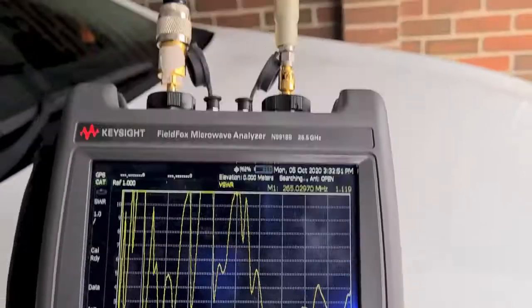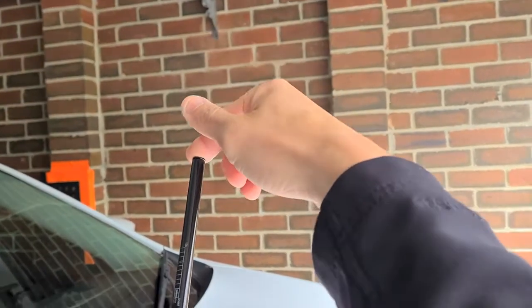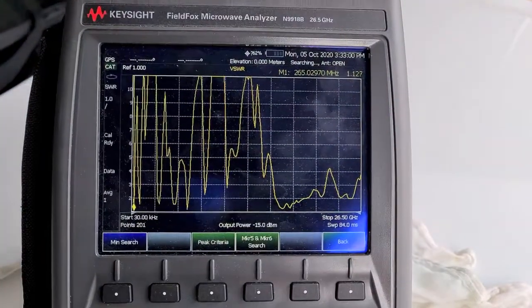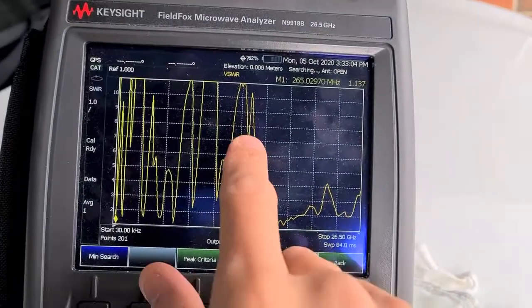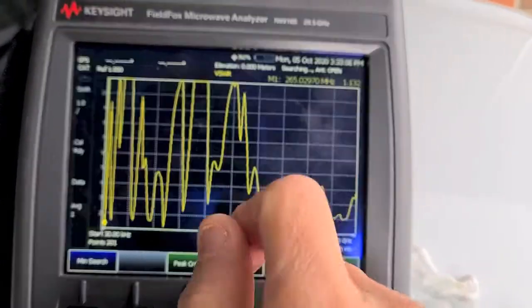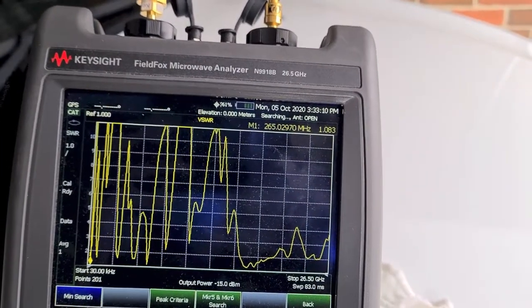As of now, this is a whip antenna. It's retractable so you can actually adjust it. With the shortest amount, the best performance is at 265 megahertz at a VSWR of 1.083.